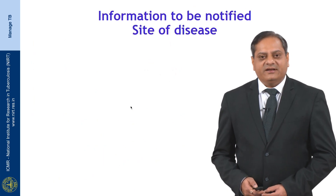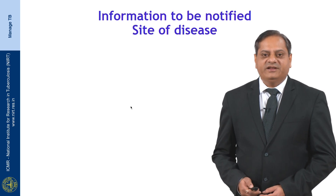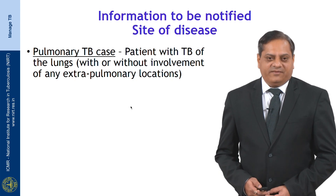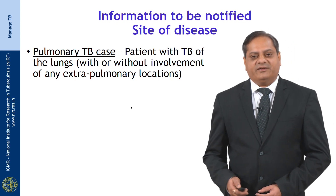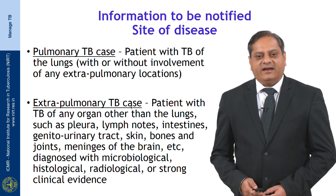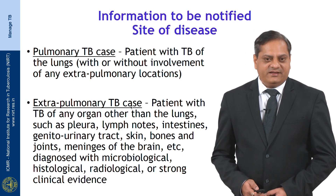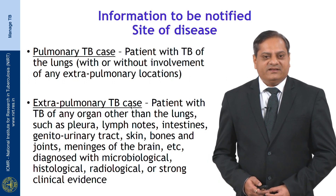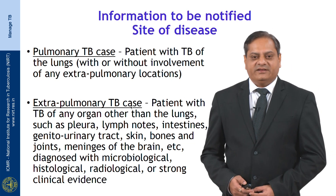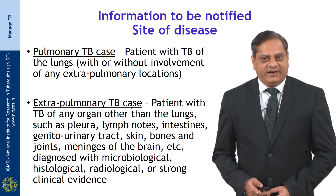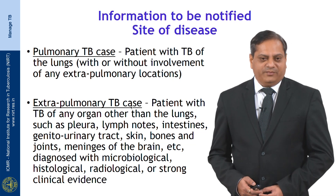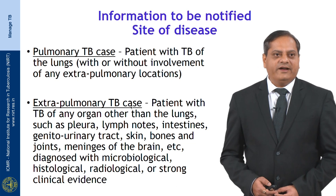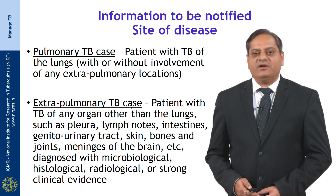What is the site of disease? The site can be pulmonary — a patient with tuberculosis of the lungs, with or without involvement of any extra-pulmonary locations. The other type is extra-pulmonary TB — a patient with tuberculosis of any organ other than the lungs, such as the pleura, lymph nodes, intestines, genitourinary tract, skin, bones, joints, meninges, etc., diagnosed with microbiological, histological, radiological, or strong clinical evidence.